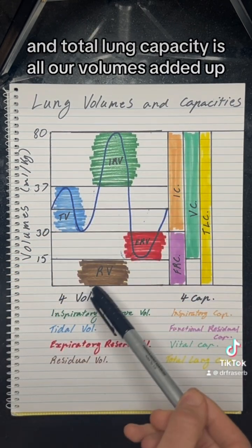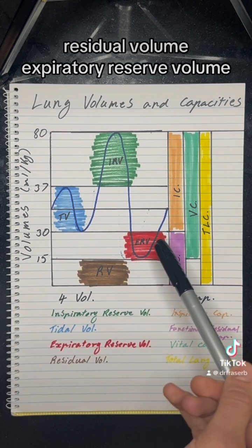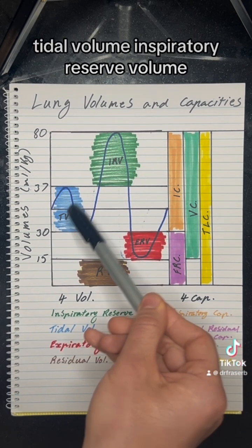And total lung capacity is all our volumes added up: residual volume, expiratory reserve volume, tidal volume, inspiratory reserve volume.